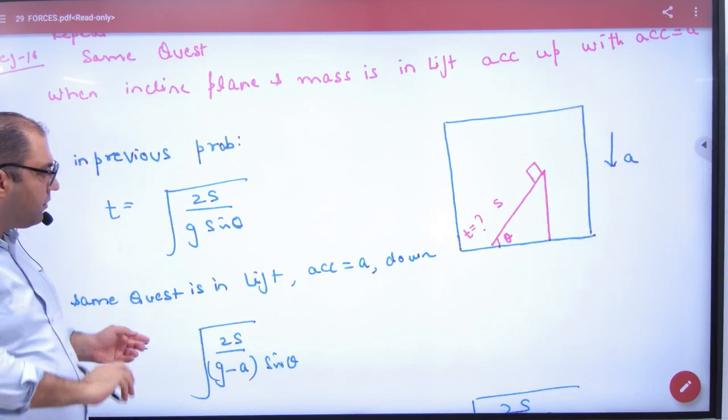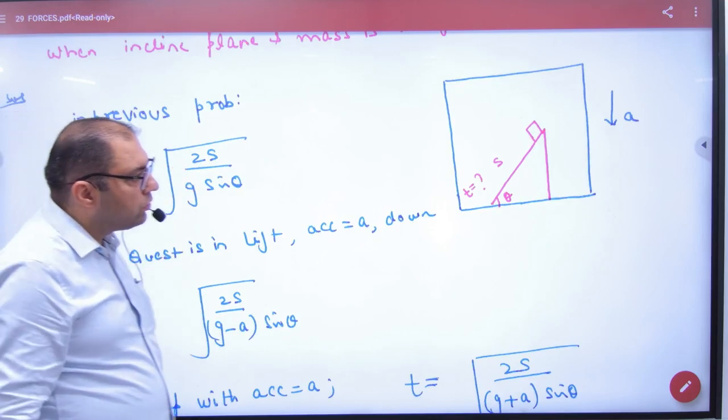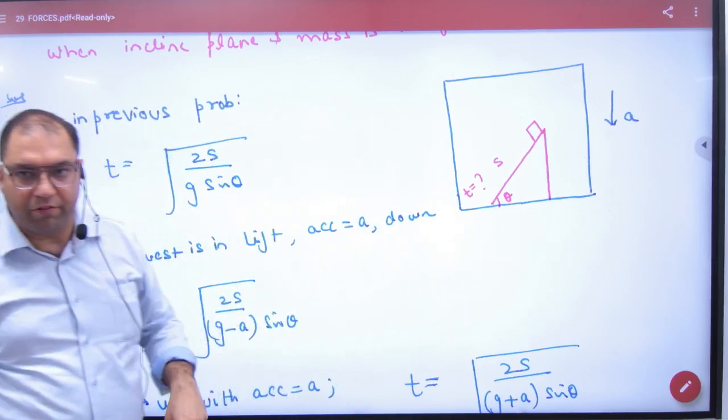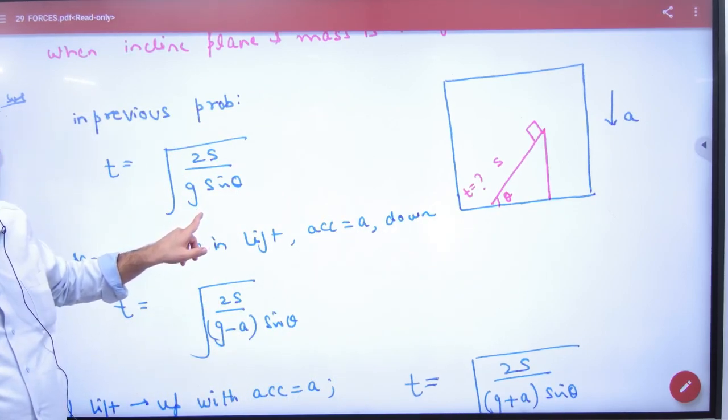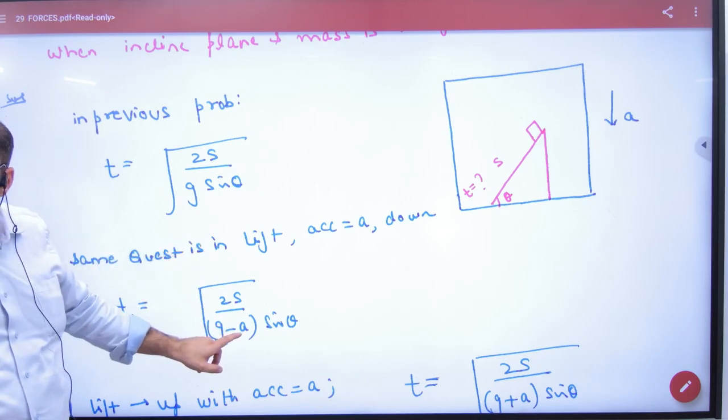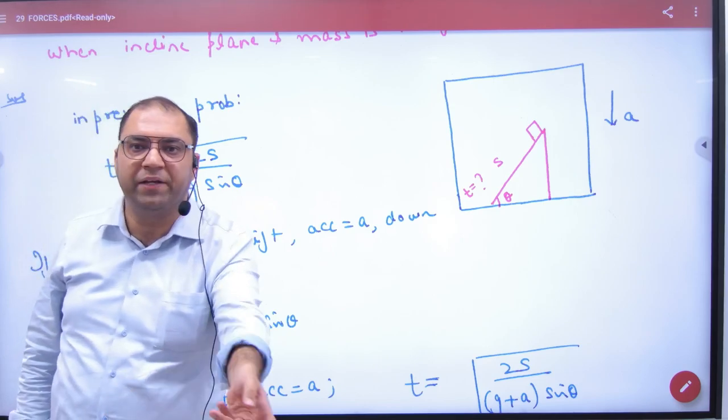Now in this case, if you think this is coming down and there is acceleration a, so wherever g is, what will we put there? g minus a. We replace g with g minus a. Because in this case, what happens in the lift? Where g is used, like Mg, it becomes M(g - a).